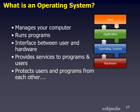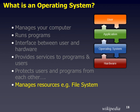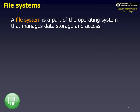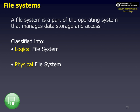The operating system manages the hardware, the software, and the bits between. It runs programs, provides services to programs and users, protects users and programs from each other, and more importantly manages resources like the file system and security. Now, most operating systems have the file system as part of the OS itself — a type of driver. In Windows it could be FAT32, NTFS, or exFAT. In Linux it could be EXT4. On Mac it could be XFS or similar. We classify file systems into two types: logical and physical.